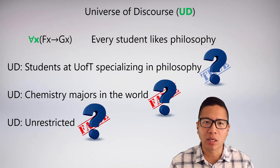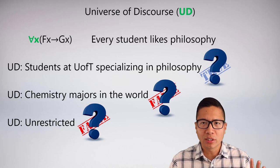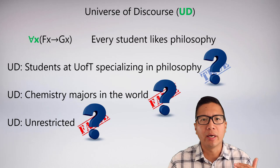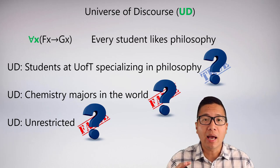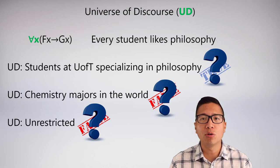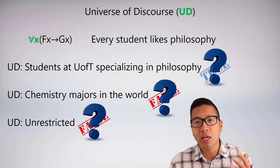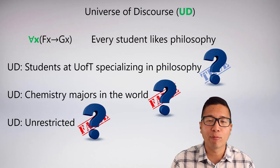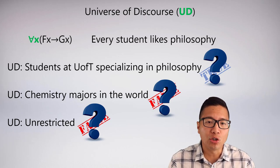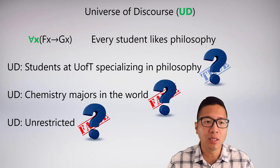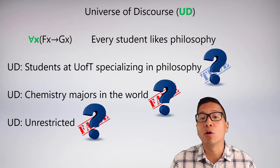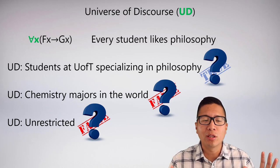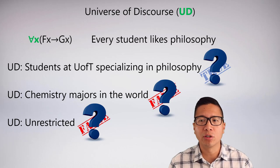The most important point here is that how we pin down and define the universe of discourse actually changes how we interpret the sentence. Even if I know the F predicate means 'student' and the G predicate means 'likes philosophy,' depending on the universe of discourse we still get radically different interpretations.